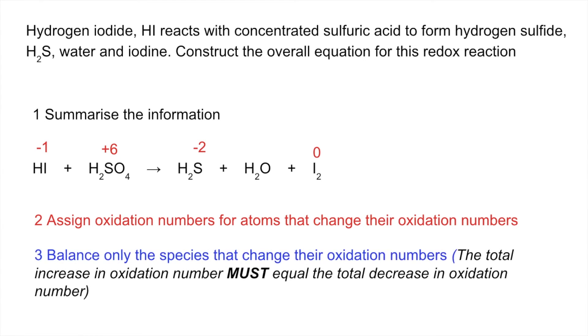So next step, balancing the species that change their oxidation number. So you can see the oxidation process. The iodine is oxidised from minus one to zero, so it's losing one electron, whereas the reduction process goes from plus six all the way down to minus two, so that must involve eight electrons. So we're going to need an eight in front of the HI, but a four in front of the I2, because obviously it's diatomic.